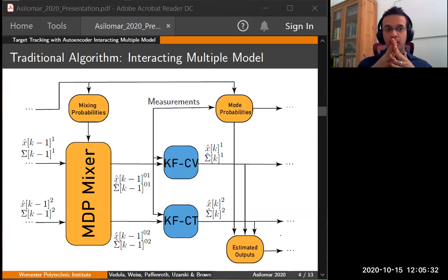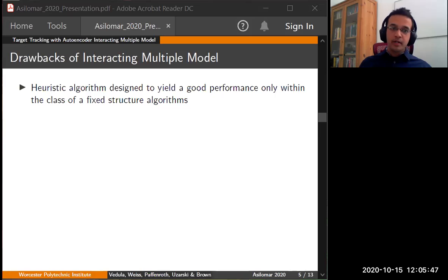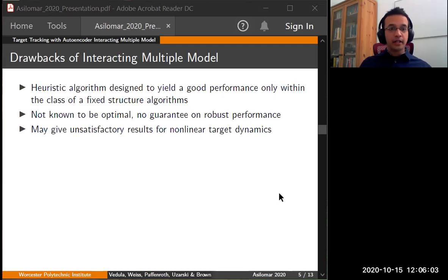While it is a good approximation for model switching, it is not an optimal model. It has a few drawbacks. It is a heuristic model designed to yield good performance only within a fixed class, fixed structure algorithms and there are no guarantees for its optimality. It is valid only within this particular structure and it is not known to be optimal on others and it might give unsatisfactory results for nonlinear target dynamics as well.